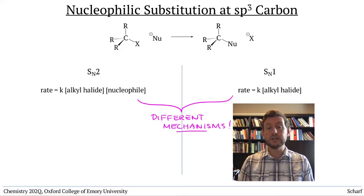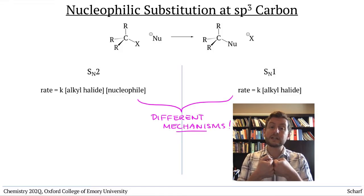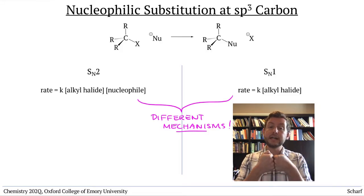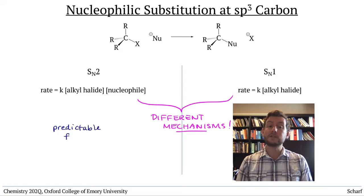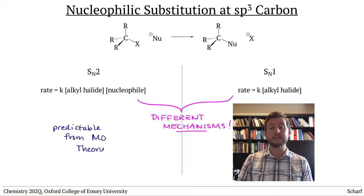The SN2 reaction occurs by a direct collision between the alkyl halide and the nucleophile. And we can predict its mechanism based on the frontier molecular orbital analysis that we practiced.